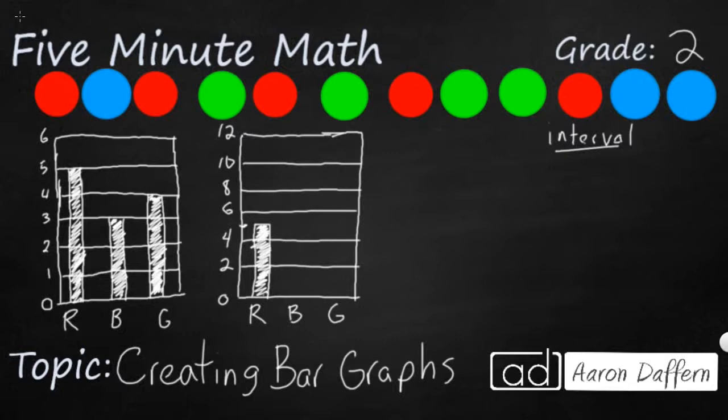Now my blue is still three. But look, three is right here between two and four. Sometimes when you don't have an interval of one, your number might not be on the side of the bar graph. And you have to see whether it's in between some of the numbers that you see on the bar graph. And then finally, my green. At least my green has a number. It's four.